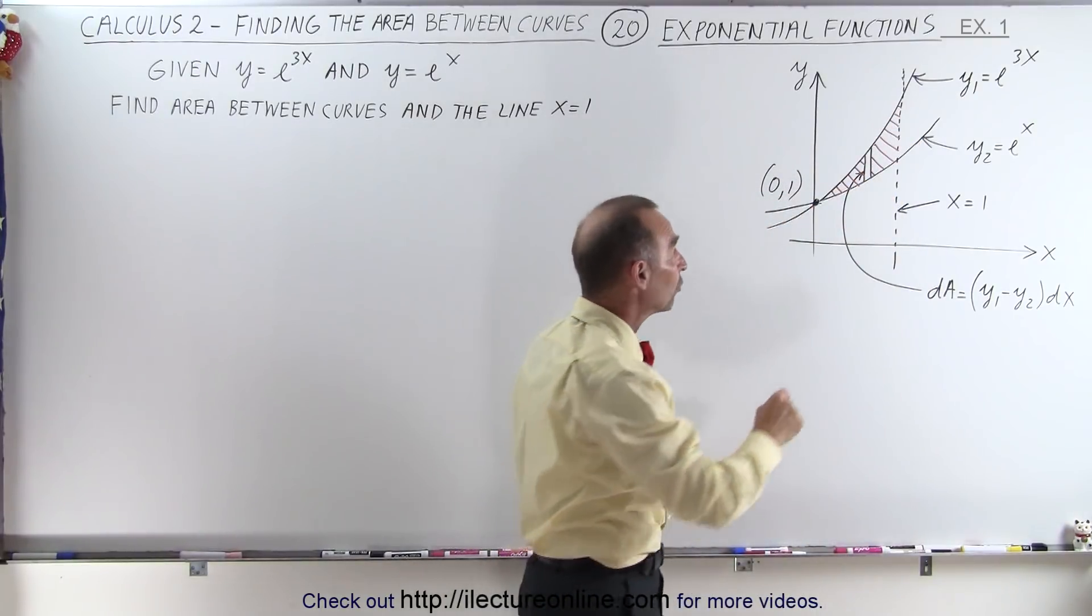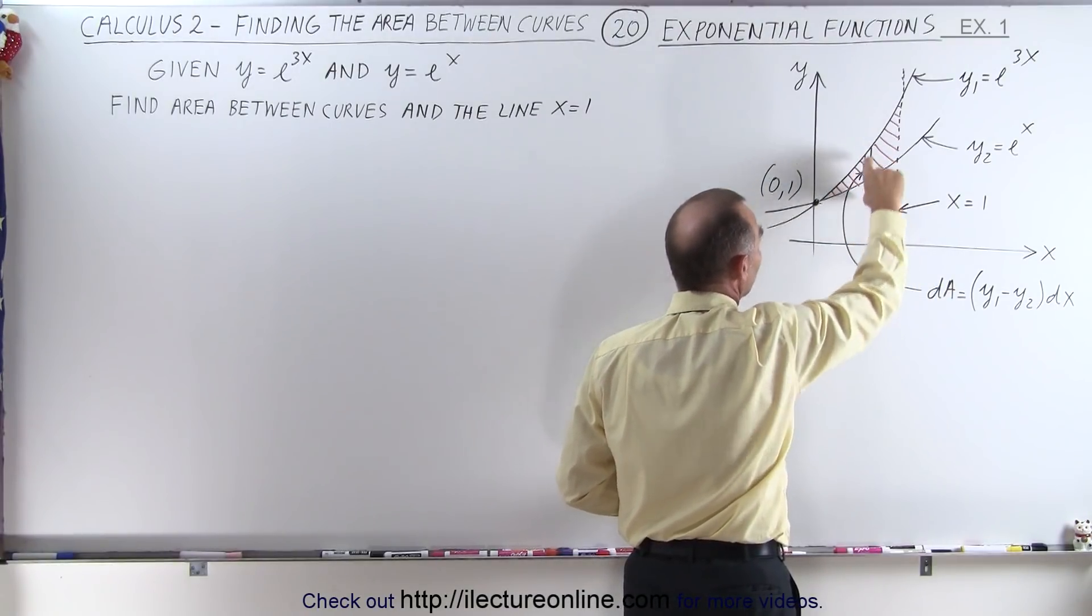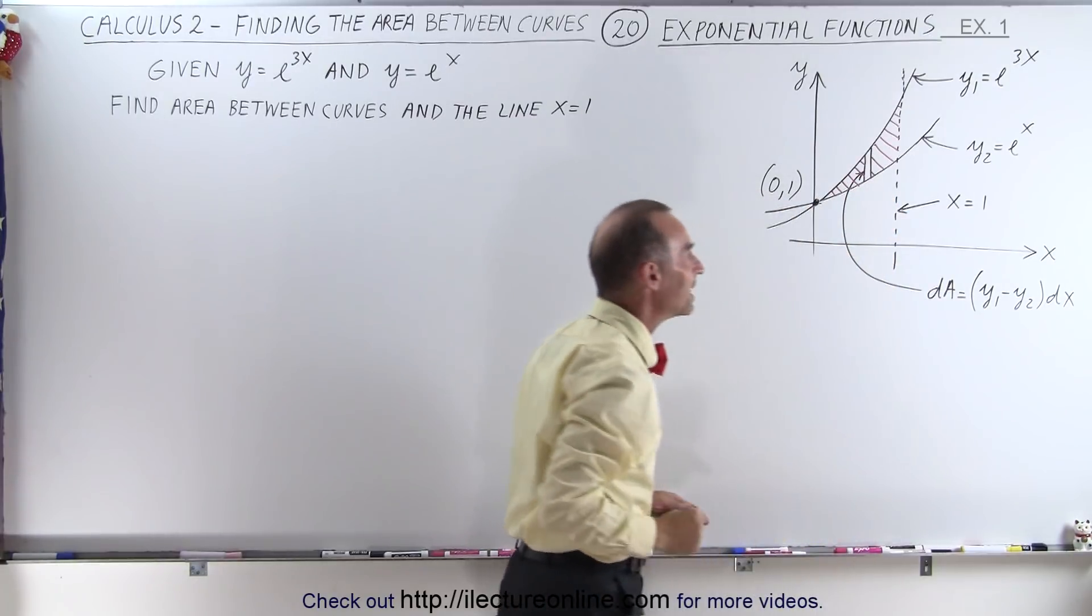And you can see that the dA, the small area element, is defined as the upper function minus the lower function for the height. That would be y1 minus y2 times the width, which is dx.